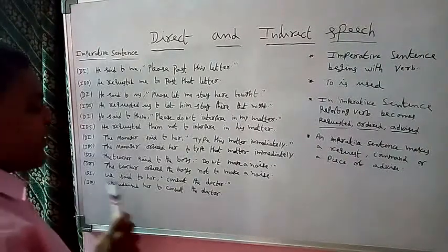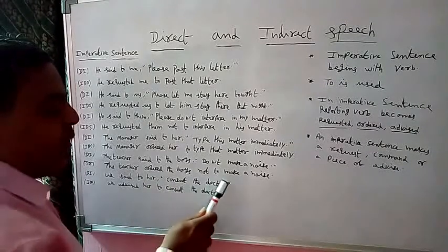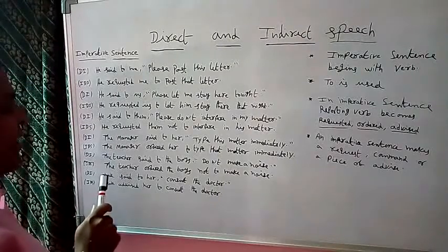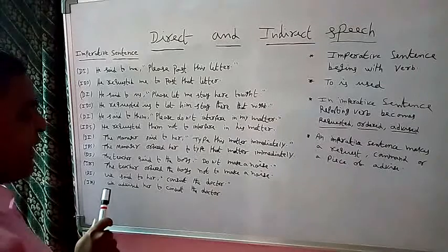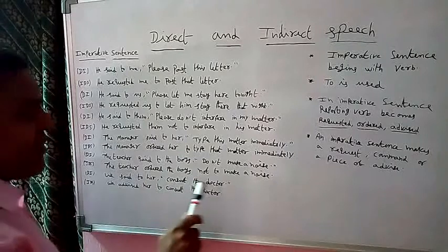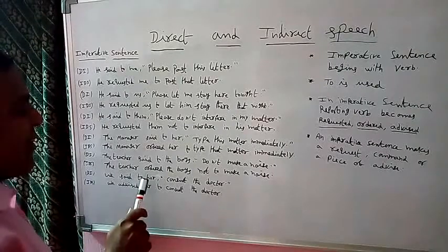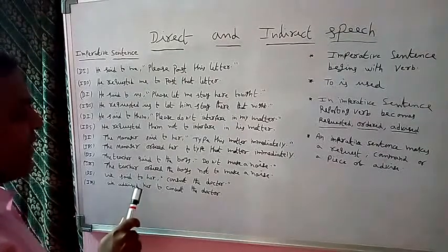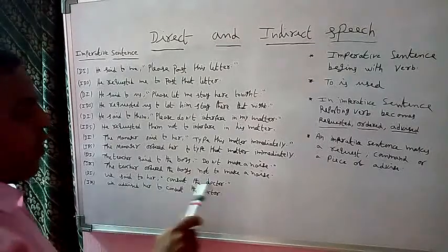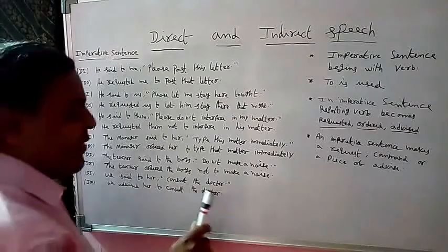The next direct speech example is: We said to her, "Consult the doctor." In direct speech, the subject is 'we', and the same subject must be written in indirect speech. The reporting verb 'said to' becomes 'advised', because the meaning of the sentence is advice. The object is 'her', and 'to' is used instead of a comma. The indirect speech is: We advised her to consult the doctor.